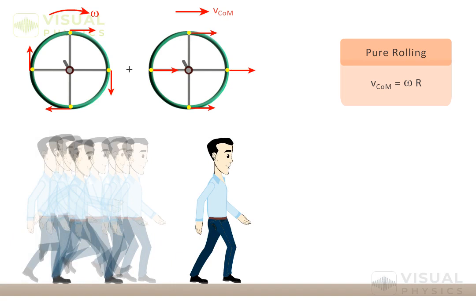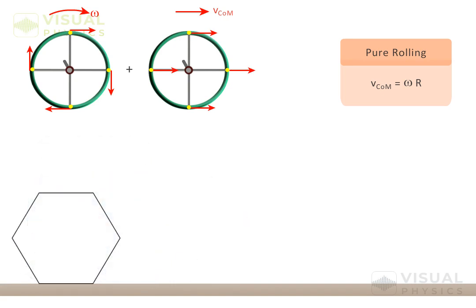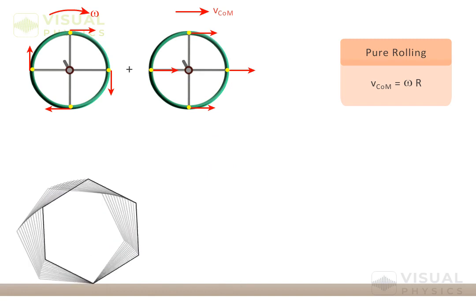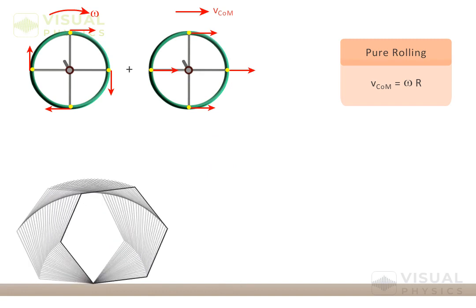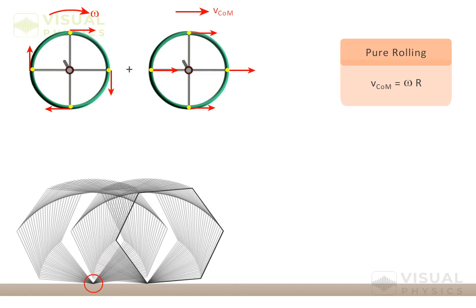Let us consider a situation that is closer to the case of rolling. If we consider such a motion of this object, then though the object is moving forward, its point of contact does not move. After a while the point of contact is a different point, but still as long as it is the point of contact, its velocity relative to ground is zero.